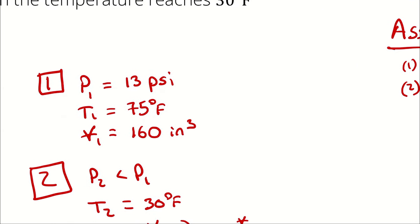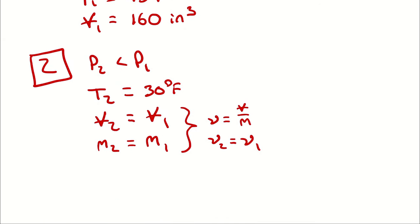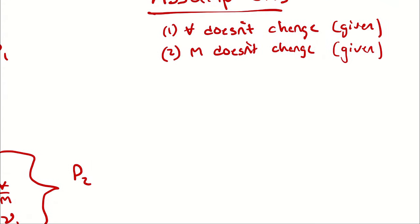My approach is going to be: take P1 and T1, use those two independent intensive properties to come up with specific volume V1, and then use T2 and V2 to come up with P2. For that, I'm going to be using the ideal gas law, and in order to use it, I'm going to be assuming the air in this football is ideal.